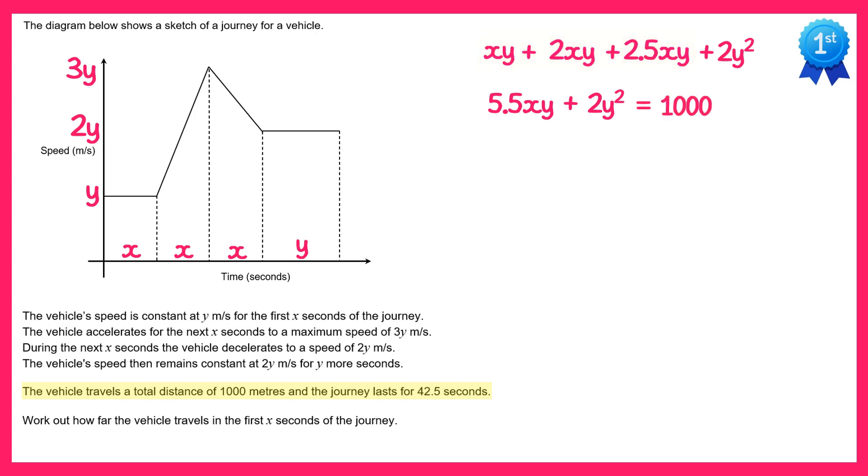Now we were also told the total journey time was 42.5 seconds. The total journey on the diagram can be seen by this arrow here. So it's x then x then x then y, so all together 3x plus y. And this must equal 42.5.